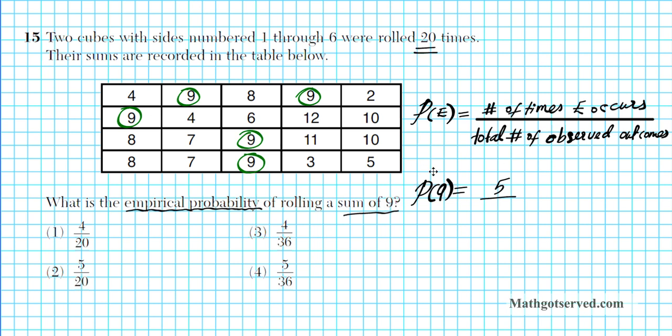You count everything, you get a total of 20. So the empirical probability of rolling the sum of 9 is 5 out of 20. Final answer is option number 2. So that's that.